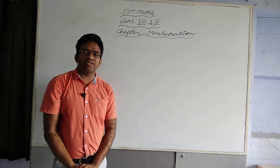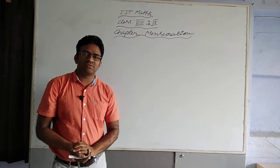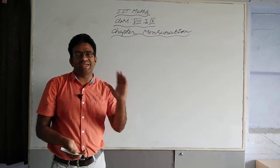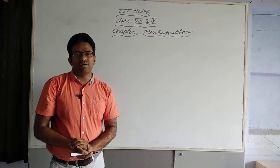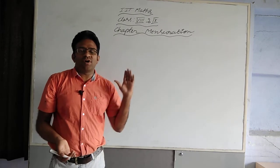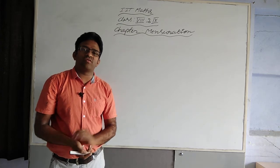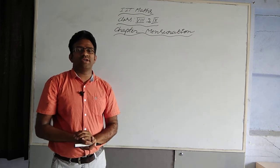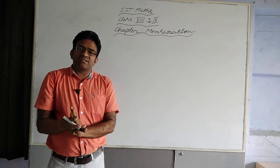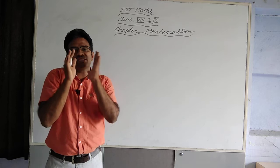In mensuration we are measuring areas and volumes. For geometrical figures we are going to find out the areas, and for solid objects we are going to find out volumes too. Today we are going to discuss about the surface areas and volumes for these solid objects.